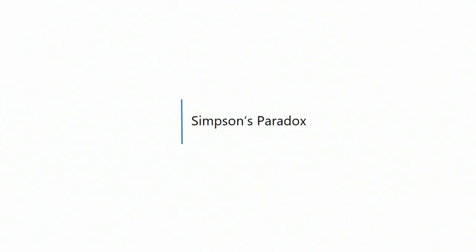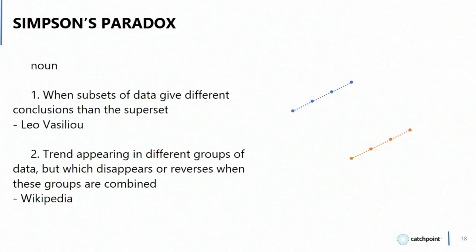This next one here: Simpson's Paradox. Wikipedia for the text, also credit for the images on the right. When subsets of data give different conclusions than their supersets — so two lines look like they're going up and to the right, but when you look at them in aggregate, the trend's actually going down.